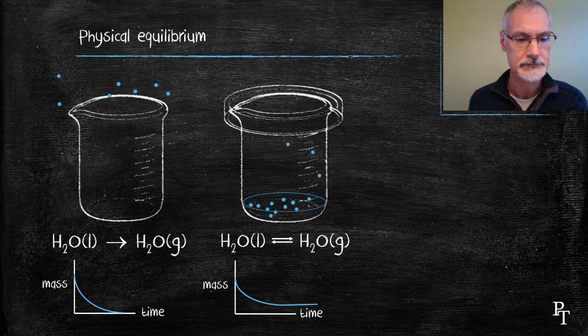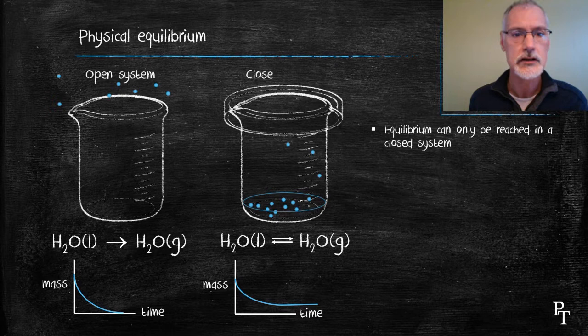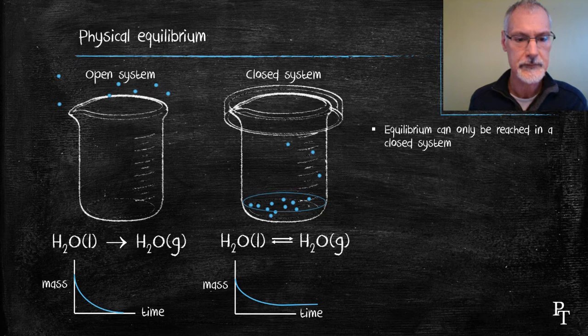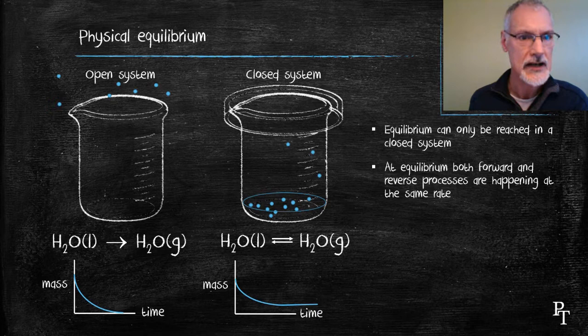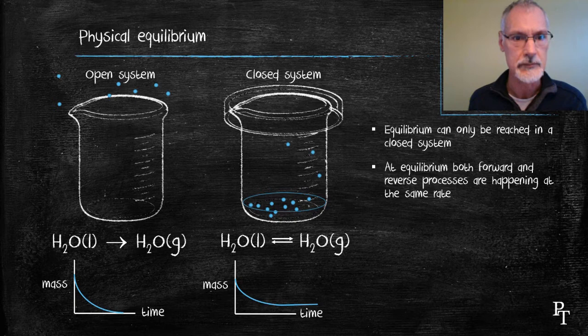A few points to note about equilibrium. First of all, you require a closed system, otherwise your products can't reform into the reactants. Secondly, both forward and reverse reactions are still happening. A reaction has not stopped, it's still proceeding both forward and reverse, it's just happening at the same time and at the same rate.